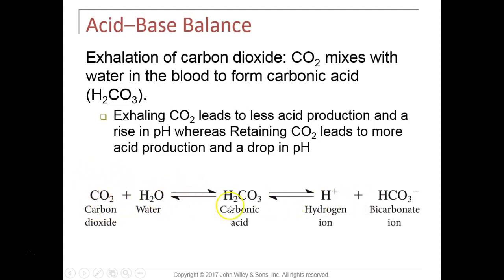If blood pH is too low, the kidneys also reabsorb more bicarbonate. By reabsorbing more bicarbonate, it can buffer the acid in the blood and bring pH back to normal. The chloride-bicarbonate exchanger — found in red blood cells, kidney cells, and others — exchanges one anion for another: as bicarbonate moves through, chloride comes in. Chloride is therefore involved in helping maintain acid-base balance.